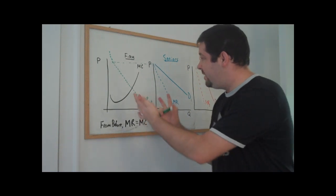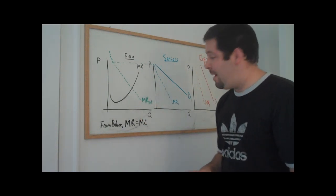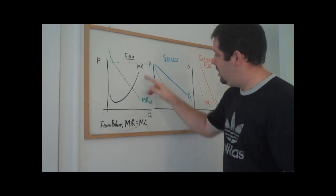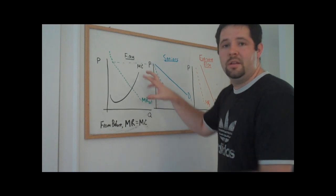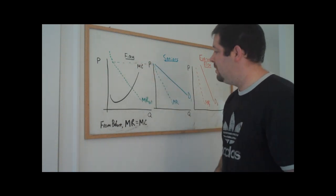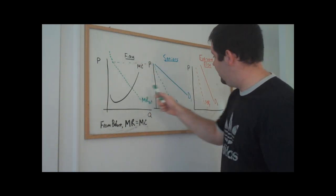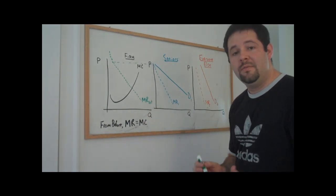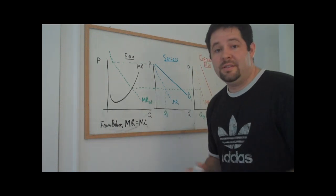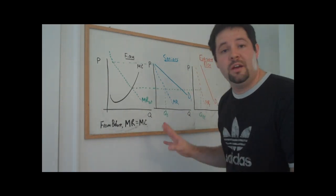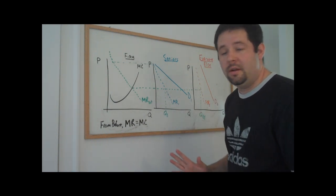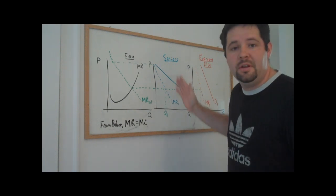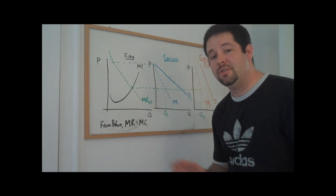Now that I've drawn that in, we can see that what's going to happen is we're going to set the marginal revenue for the entire market equal to the marginal cost in the firm's diagram. Once we do that, we can draw a horizontal line over to these two markets to determine the quantities that the firm provides to each market. Then, within each of these markets, we go up to the demand curve to pick off the price charged in each market.